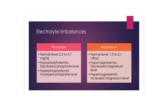Hypermagnesemia — an increase in serum magnesium — results from kidney insufficiency and the inability to excrete the amount of magnesium taken in. Symptoms include muscle weakness, decreased tendon reflexes, altered mental status, respiratory muscle paralysis, and apnea. Cardiac arrest can occur if there is too much magnesium.